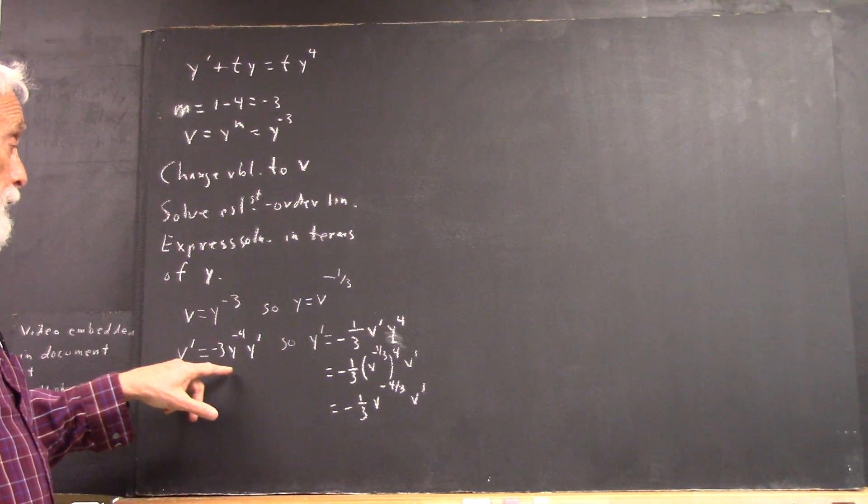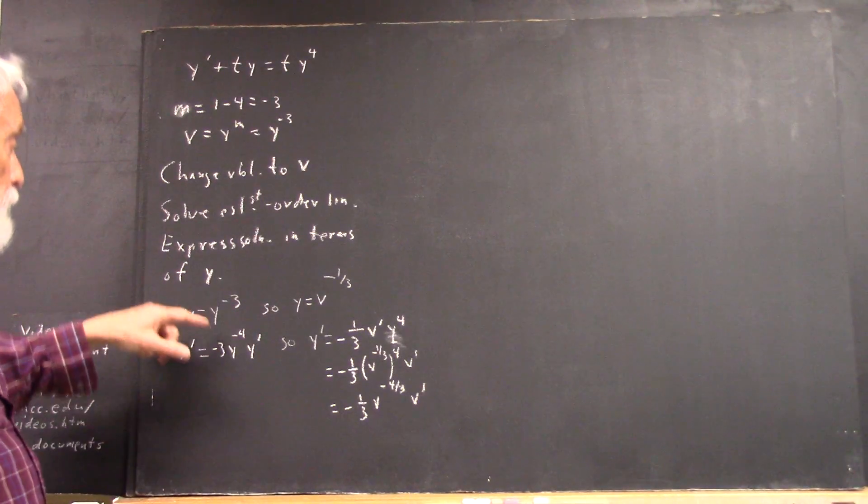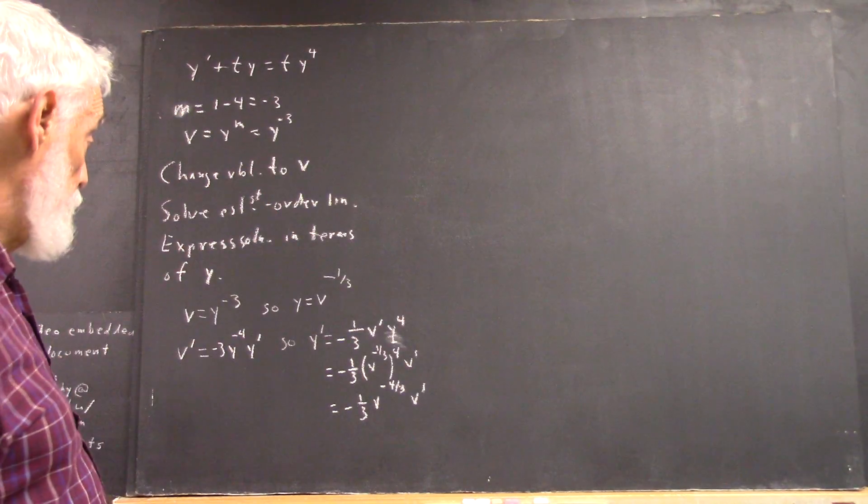Okay, v prime is going to be negative 3 y to the negative 4 y prime, since the derivative of y to the negative 3 is negative 3 y to the negative 4.